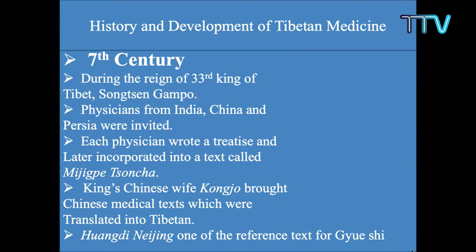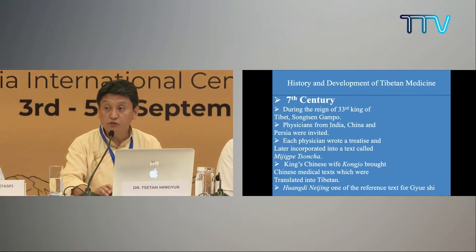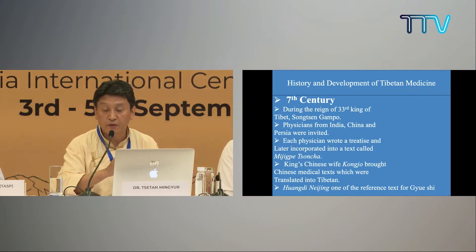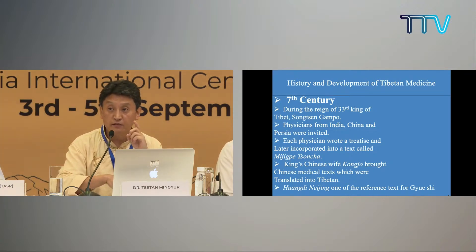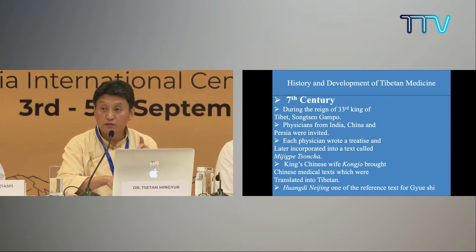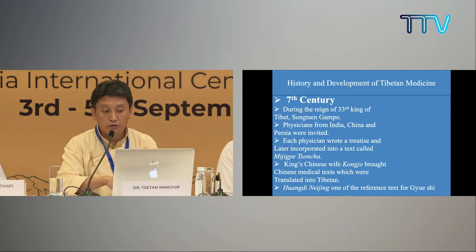In the seventh century, during the reign of the 33rd king of Tibet, Songtsen Gampo, physicians from India, China, and Persia were invited. Each physician wrote one treaty, which was later incorporated into one text. At that time, the king's Chinese wife, Wengchen Guangzhou, also brought a Chinese medical text, which was later translated into Tibetan. One important Chinese medical text also became a reference for Gyushi, the principal text of the present Tibetan medical system, demonstrating the interconnection of Chinese medicine.